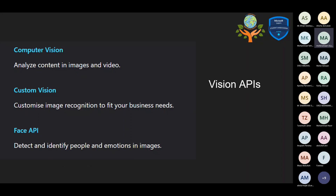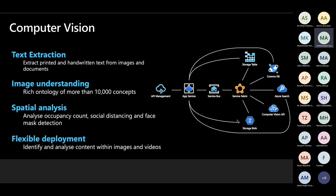Under the Vision API, we can do three basic tasks: analyzing an image, customizing image recognition, and detecting people and their emotions using the Face API. For example, if you want to create software for a self-driving car, you can use the Computer Vision API for understanding the objects in front of you — cars, two-wheelers, humans, etc. We also have the text extraction API for specific purposes.